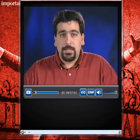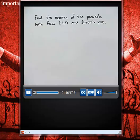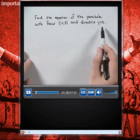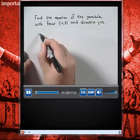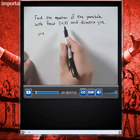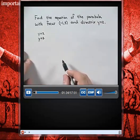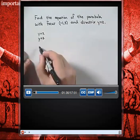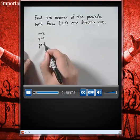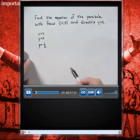Find the equation of the parabola with focus negative 1, 3 and directrix y equals 2. Our directrix has a y-value of 2 and our focus has a y-value of 3. Since these are one unit apart, our value for p in this problem will be 1 half — the distance between them divided by 2.